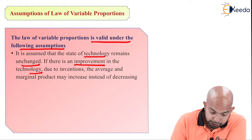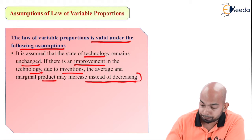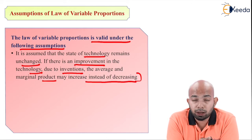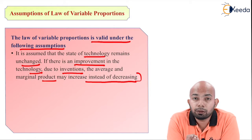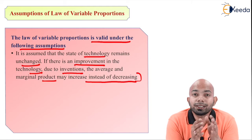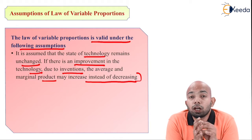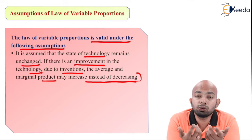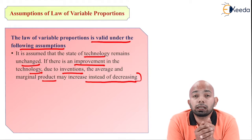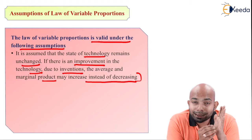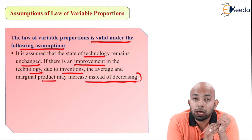If there is an improvement in technology due to inventions, the average and the marginal product may increase instead of decreasing. If there is any change in the technological sphere due to recent developments in science and technology, and if there are numerous inventions, the marginal demand or satisfaction for that product will keep increasing because you will have something new, giving you the willingness to spend for one more unit.